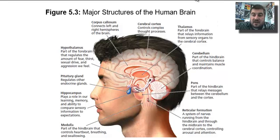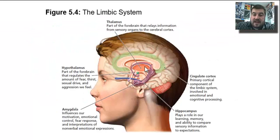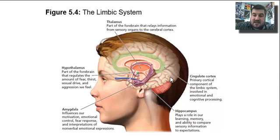The thalamus and hypothalamus are visible on this picture. The thalamus is here in the middle, and the hypothalamus is right underneath — very small. The amygdala is this little almond-shaped structure. The cingulate cortex we'll get to, and the hippocampus is down below.